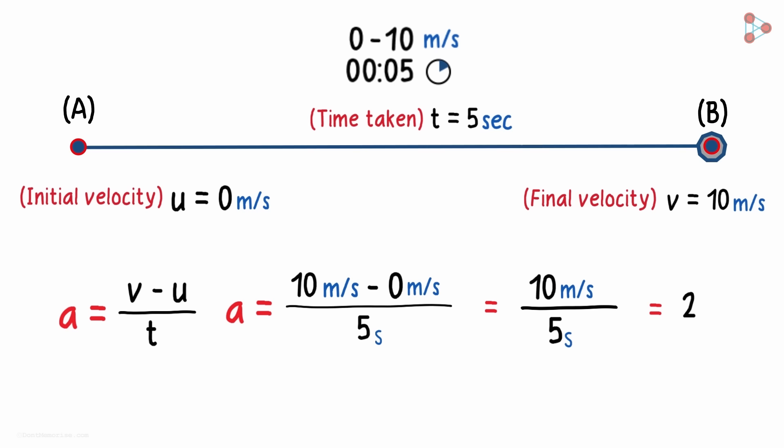Wait, hold on. What will be the units of acceleration? We should get a hint by looking at this. The units of acceleration will be meters per second per second, because it's the change in velocity over the time taken. As this is meters per second, we can carry this second to the denominator and what we will get is meters per second squared.